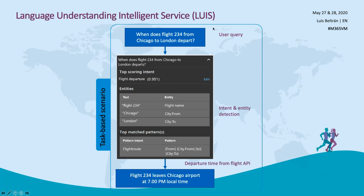As a summary: you have a sentence like 'When does flight 234 from Chicago to London depart?' — you train the model for the 'flight departure' intent. The model identifies that flight 234 is the flight name, Chicago is the origin city, and London is the destination. You train this model to understand these structures.